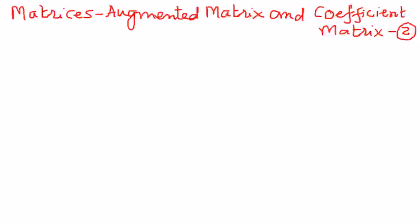In our previous example, we have seen how to write augmented matrix and coefficient matrix from a given system of linear equations. If we are given an augmented matrix, we should be able to write a system of linear equations from that. For example, let me explain this with an example.